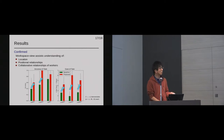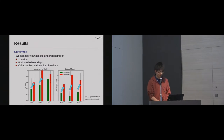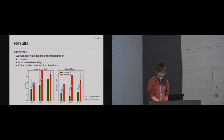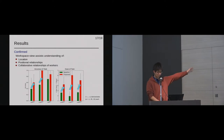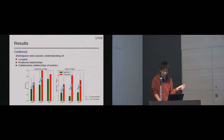We confirmed that the proposed workspace view assisted understanding of locations, positional relationships, and collaborations of workers. As you can see in the left chart, accuracies were improved in all tasks — especially in Task 1 and 2, the scores were significantly higher compared to the baseline. In the right chart, subjective ease of tasks was also significantly improved in all tasks. In the baseline, participants were very busy comparing multiple videos to find locations and collaborations. By contrast, in the proposed interface, these busy behaviors were effectively replaced by just looking at one workspace view widget.